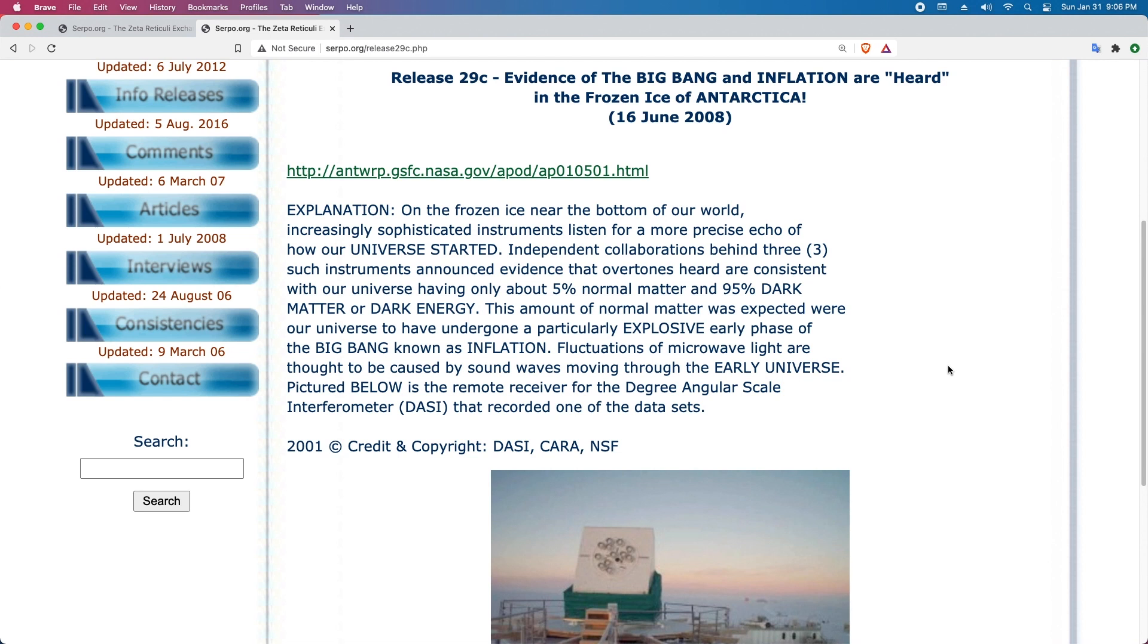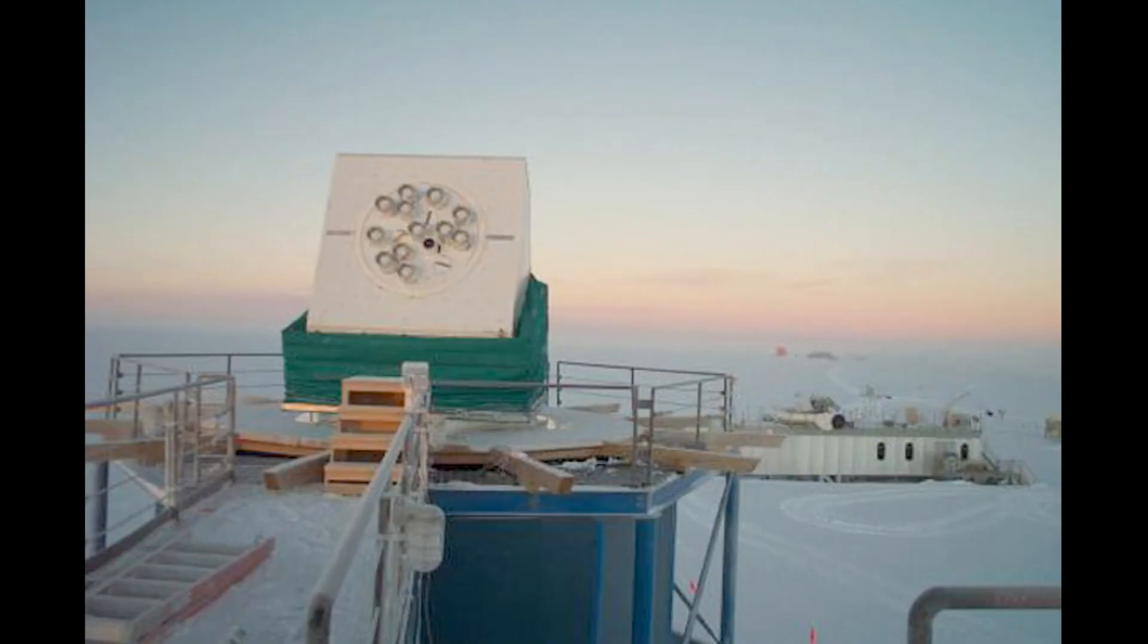Release 29C: Evidence of the Big Bang and Inflation are Heard in the Frozen Ice of Antarctica. On the frozen ice near the bottom of the world, increasingly sophisticated instruments listened for a more precise echo of how our universe started. Independent collaborations behind three such instruments announced evidence that overtones heard are consistent with our universe having only about 5% normal matter and 95% dark matter or dark energy. Fluctuations of microwave light are thought to be caused by sound waves moving through the early universe. Pictured is the remote receiver for the Degree Angular Scale Interferometer that recorded one of the data sets.